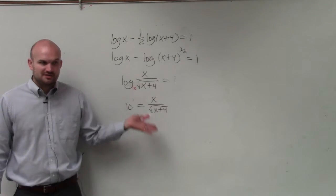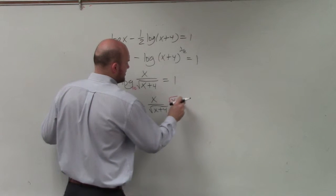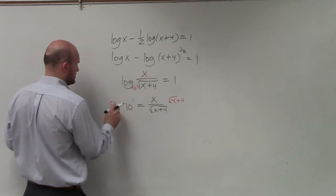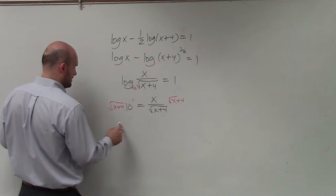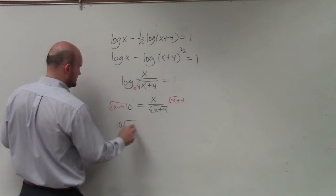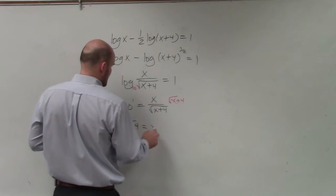Now, to solve for x, you can't have an x in the denominator, so I'm going to get rid of the x in the denominator by multiplying by the square root of x plus 4 on both sides. And therefore, I have 10 times the square root of x plus 4 equals x.